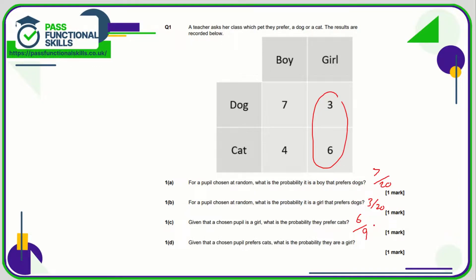Six out of nine can be simplified to two-thirds. For part d, given that a chosen pupil prefers cats — how many prefer cats? That is ten. Of the ten, how many are girls? That's six out of ten, which is the same as three out of five.